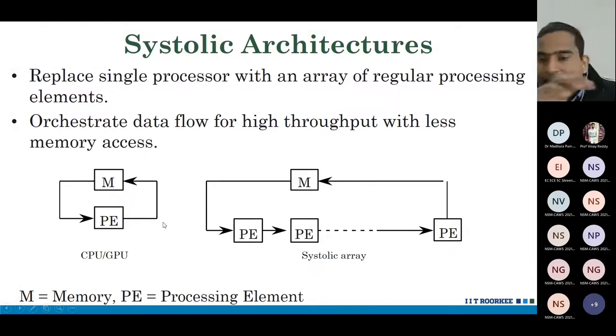However, in systolic array, we have an array. That's why it's called a systolic array. It could be one-dimensional array, two-dimensional array. People have also proposed three-dimensional systolic arrays. Here, only the PE at the boundary access the memory.